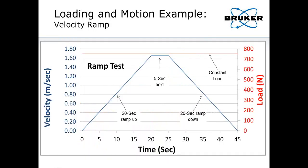Here's an example of the ramp test plotted on the same graph. The red line is constant load — shown here for the 3 MPa example — and the blue line is the velocity profile: ramping up over 20 seconds, holding for 5 seconds, then ramping down over 20 seconds. We collect data the entire time and analyze it for this type of test.